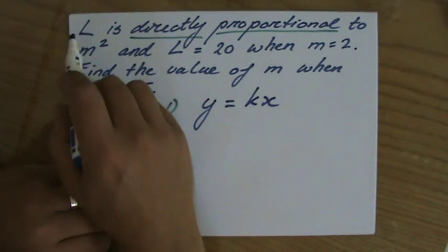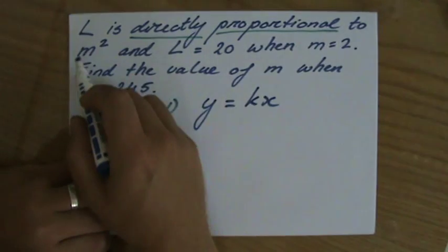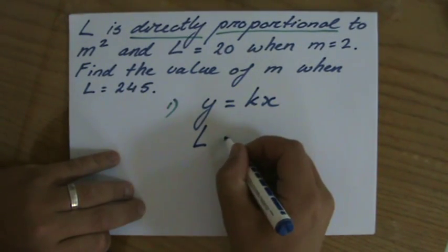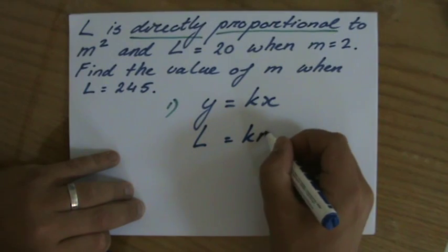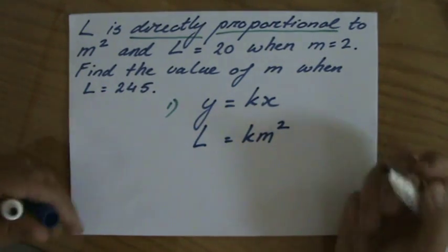However, in this case, they say L is directly proportional to m squared. So L is directly proportional to m squared. Okay? There we go.